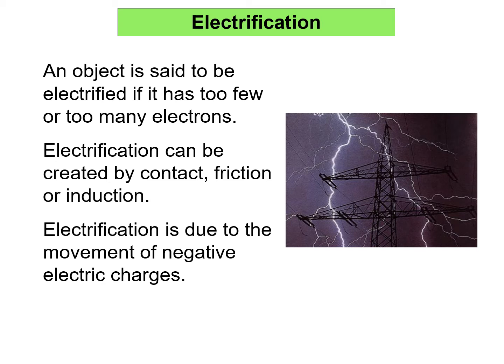An object is said to be electrified if it has too few or too many electrons. There are three means by which electrification can be created: contact, friction, or induction.